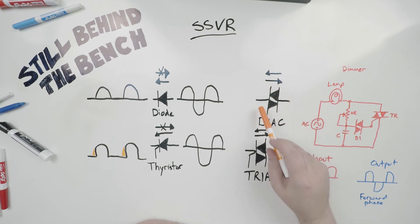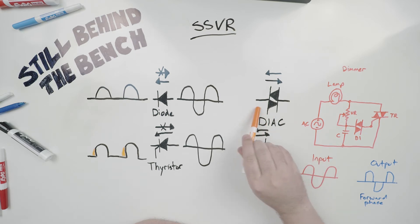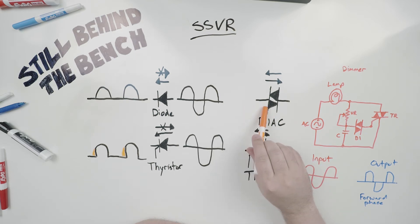So if this was set, if this was built or constructed, which is manufactured with a 30 volt breakthrough voltage, it wouldn't start conducting until the wave hit 30 volts.